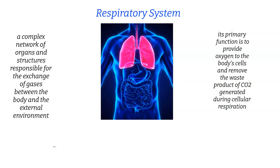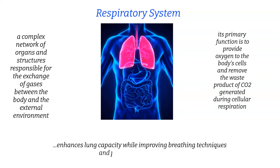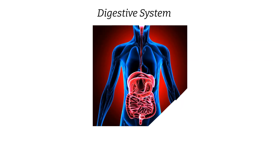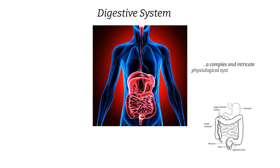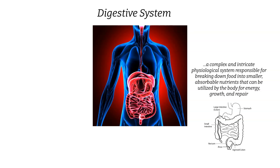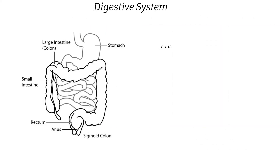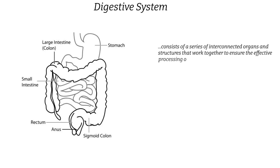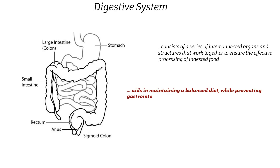Understanding the respiratory system enhances lung capacity, improves breathing techniques, and promotes overall vitality. The fifth of the 12 body systems is the digestive system — a complex physiological system responsible for breaking down food into smaller, absorbable nutrients utilized by the body for energy, growth, and repair. It consists of a series of interconnected organs working together to ensure effective processing of ingested food, aiding in maintaining a balanced diet and maximizing nutrient absorption.